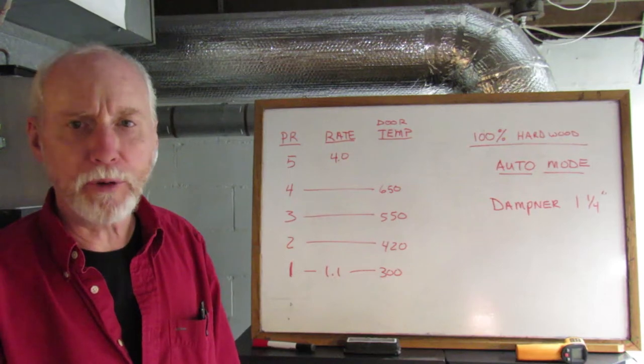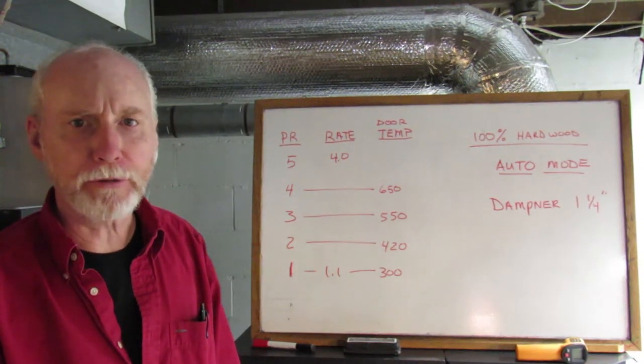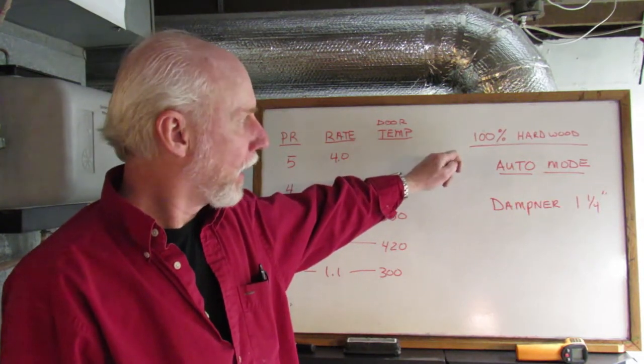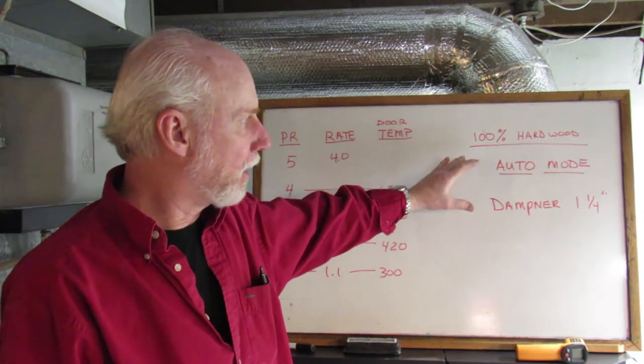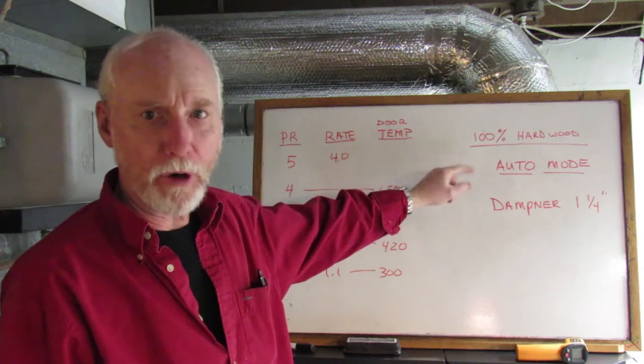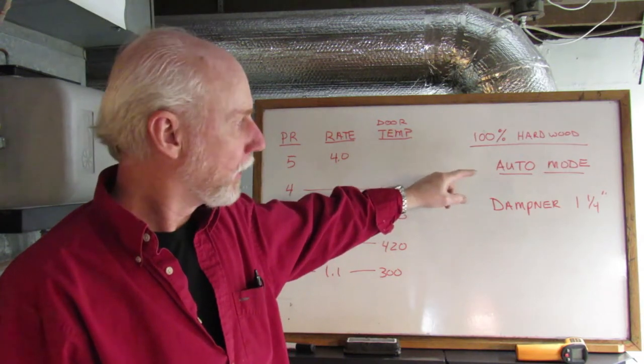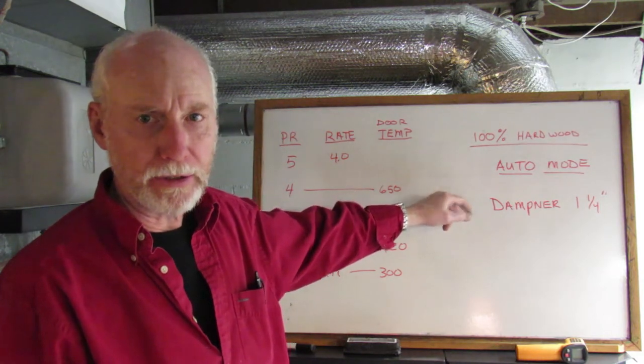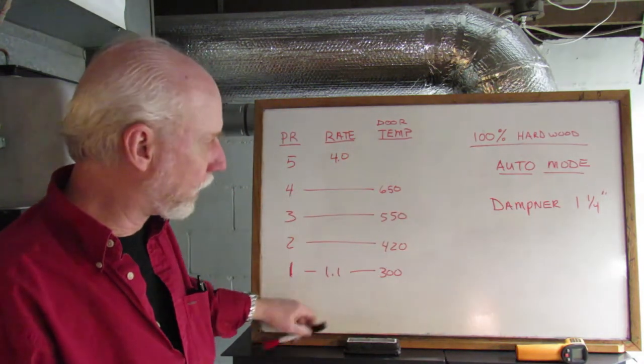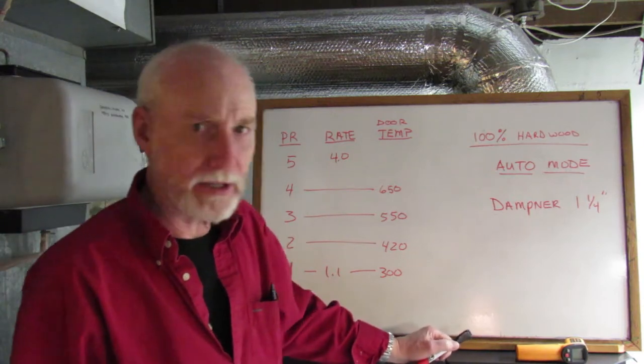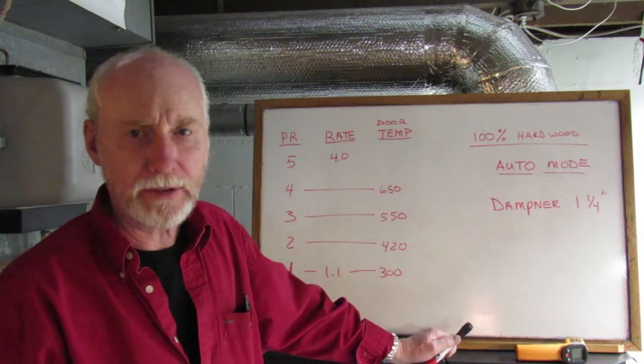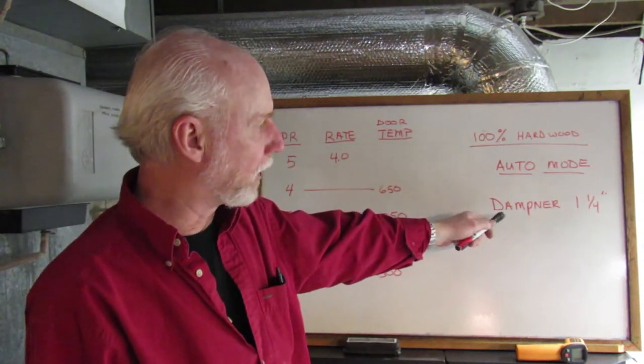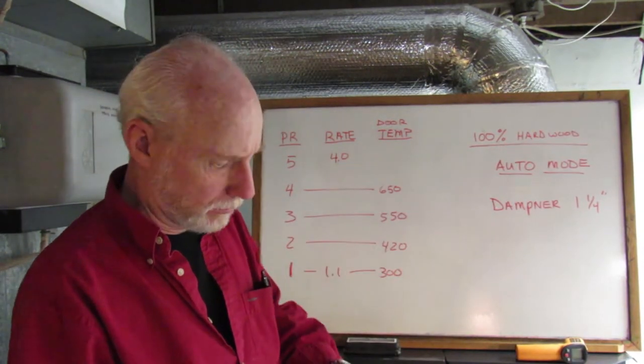Okay, as you know it's very important to have consistent moisture-free fuel. I'm using right now 100% hardwood. You need to have your stove on auto mode and the dampener about an inch and a quarter, inch and a half out. Now in order to keep the heat as high as what you want it and consistent, you need to adjust the dampener appropriately, leave it on auto mode.